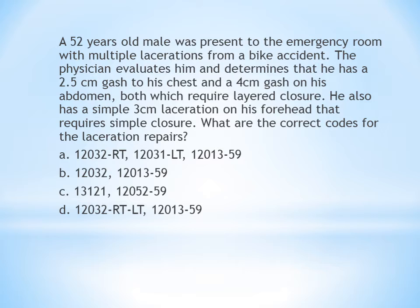In total there are three repairs: one simple repair and two layered closures, which means two intermediate repairs. The simple repair site is the forehead (3 cm) and the intermediate repair sites are chest (2.5 cm) and abdomen (4 cm). Since chest and abdomen come under the same anatomy group, you can add 2.5 and 4 cm, giving a total of 6.5 cm for intermediate repair. Open your textbook to the repair section for simple and intermediate repair.